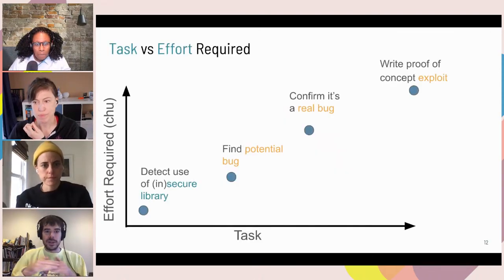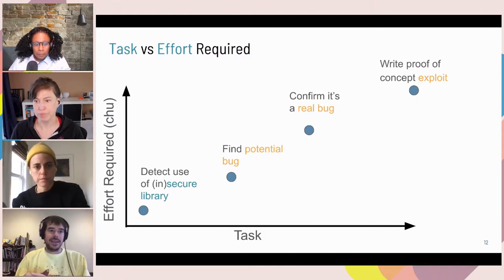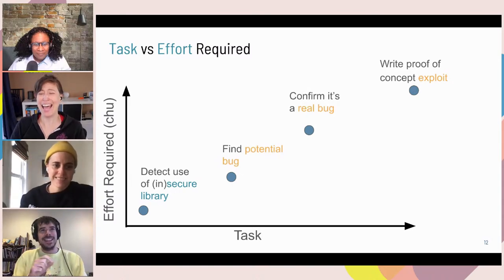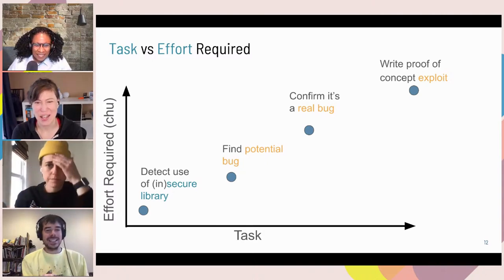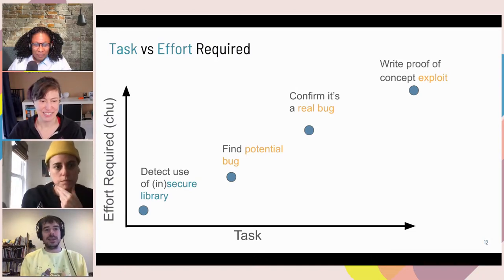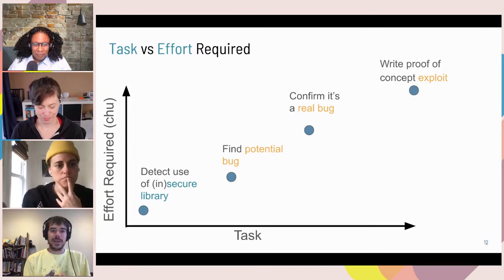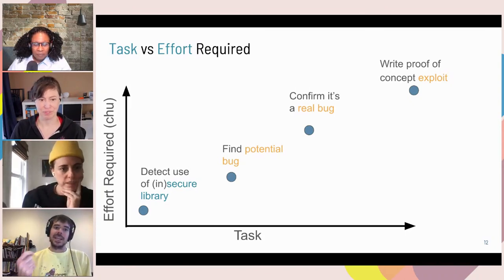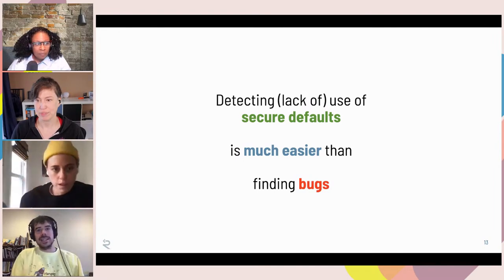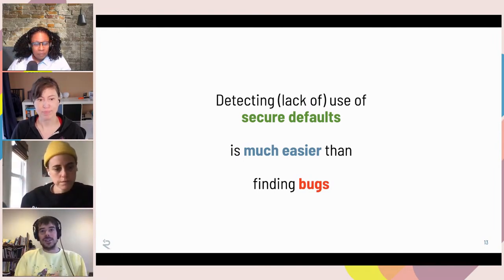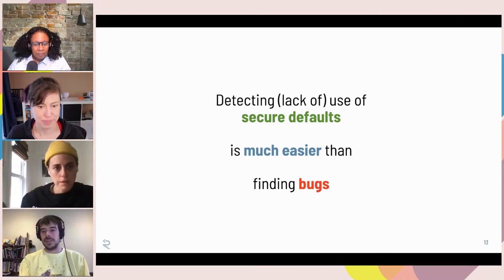I like to think about this in terms of what's your task versus how much effort does that take — the Y-axis being CHUs, or Clint Hand-Weighted Units, the official metric. It's very easy to say, is this using the secure version of a library or the insecure version? That's almost just grep, or a smarter grep. Finding a potential bug is harder. Confirming if something is a real bug is even harder. Writing a proof-of-concept exploit is even harder. Detecting the use or lack of use of secure defaults is fundamentally much easier than finding bugs, because when you're finding bugs you're not 100% sure — which leads to why there are many false positives in common static and dynamic analysis tools.